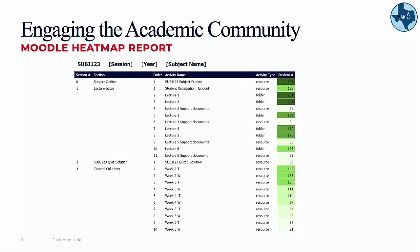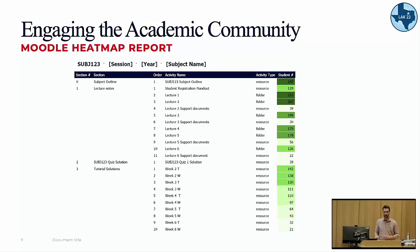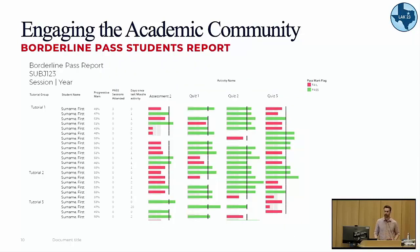Here is a different report that goes out around the middle of session. This moves from predicting which students are struggling toward helping academics reflect on their teaching practice and how students are interacting with digital learning opportunities. Students may not be engaging as intended, or unexpected patterns may emerge. Towards the last couple of weeks of session, we provide more specific guidance on borderline pass students heading into final assessments, with targeted academic support based on where they are struggling.